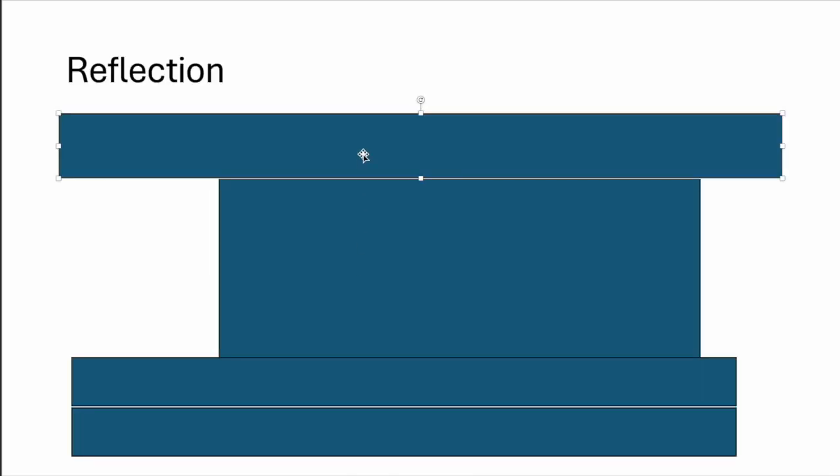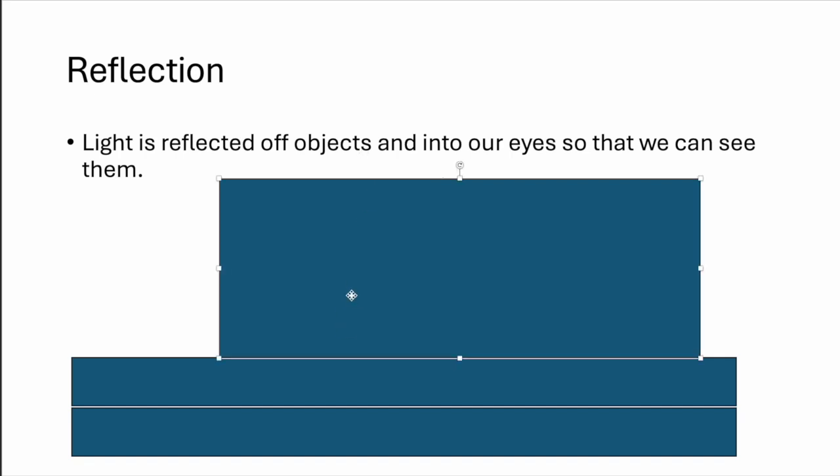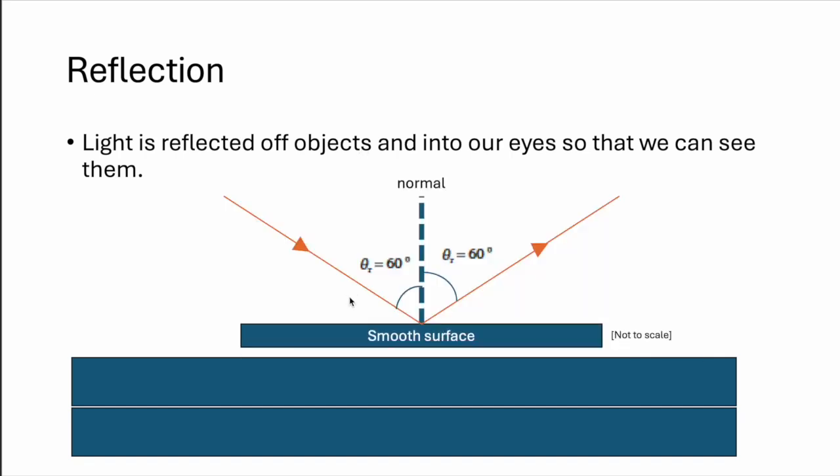So light bounces off items and into our eyes. That's why we can see them. Only smooth surfaces like glass, like mirrors, are you able to see a reflection.